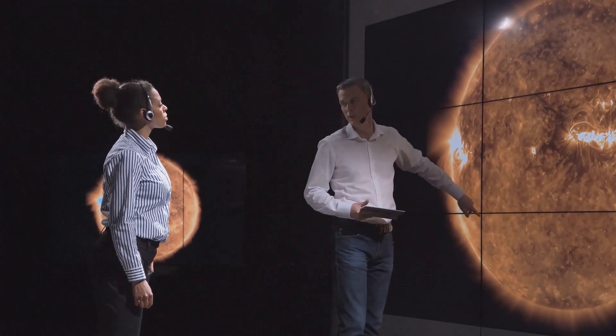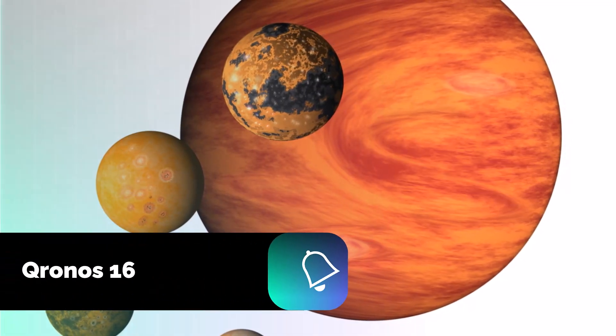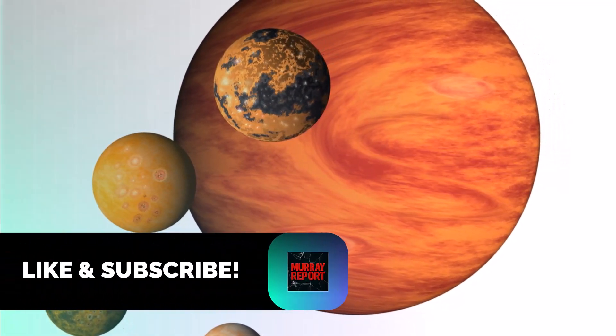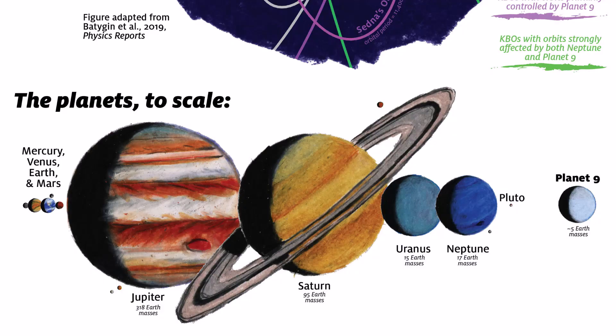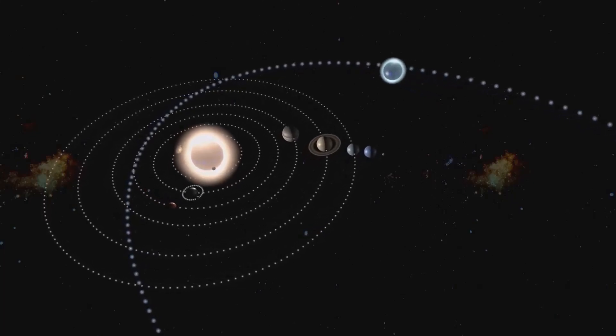Planet Nine, according to Batygin and Brown's calculations, is unlike any other planet in our solar system. It is a hypothetical ice giant, estimated to be five to ten times the mass of Earth. What truly sets Planet Nine apart is its proposed orbit.